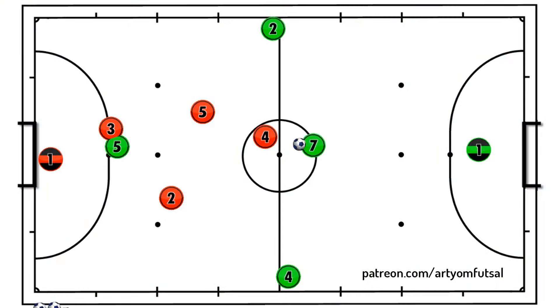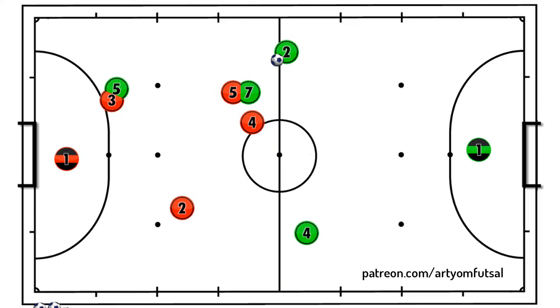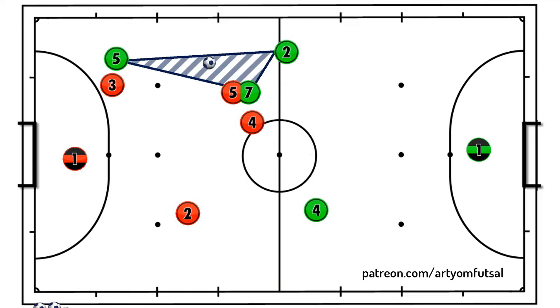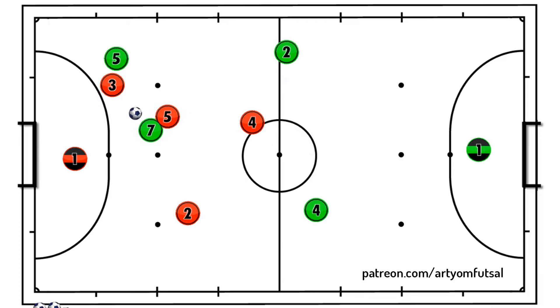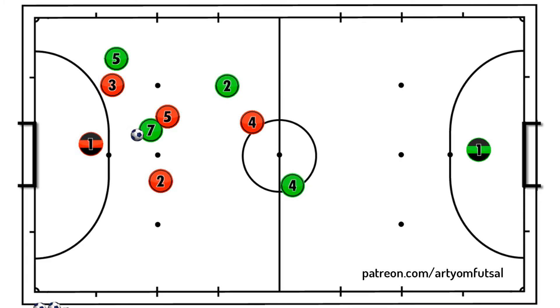Top 4 Futsal Attacking Tactics. First up, the triangle movement. This tactic involves three players creating a triangle formation, allowing for quick passing and movement. It keeps defenders guessing and creates free space.